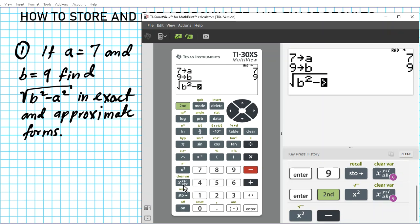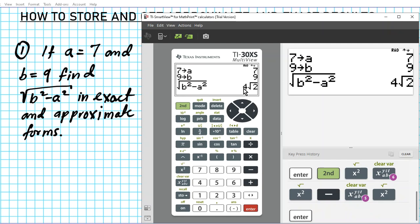So B squared minus A squared. So go back to this button. You'll press it five times. One, two, three, four, five. That's A. And I can use square or carrot two. So I'm just going to use square. Okay. And then press enter. So this is the exact form. Notice that it's expressed in the rational form four root two. Okay. This is the exact form.